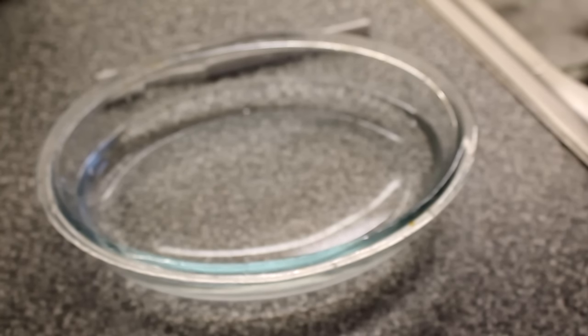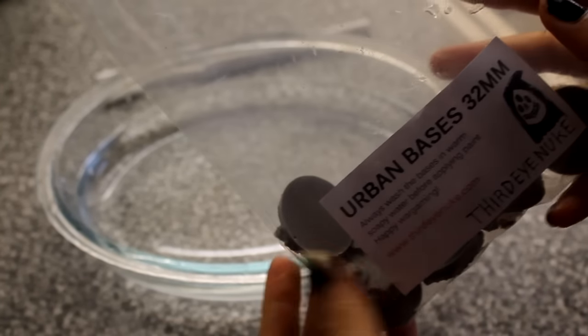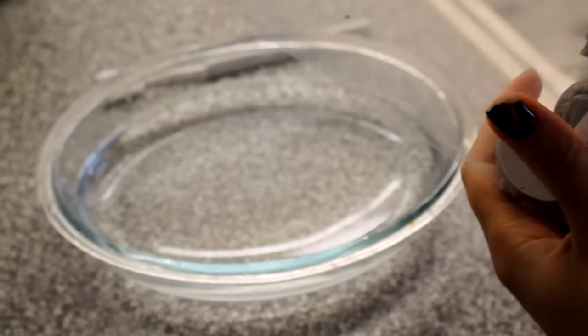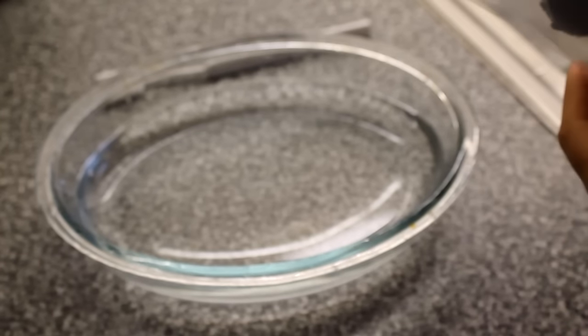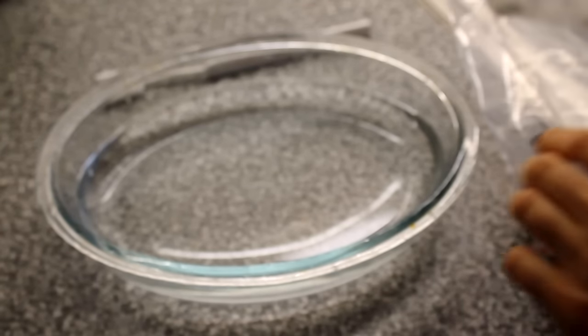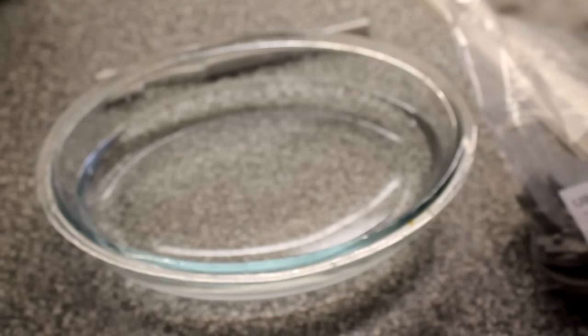When working with resin bases, for example like the ones we produce at the studio, basically the first thing to do is to clean them with some soap to remove the release agent.